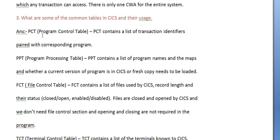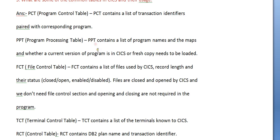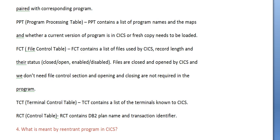Next question: what are some of the common tables in CICS and their usage? The common tables are: PCT (Program Control Table) contains a list of transaction identifiers paired with corresponding programs. PPT (Program Processing Table) contains a list of program names and maps, and whether a current version of program is in CICS or fresh copy needs to be loaded.